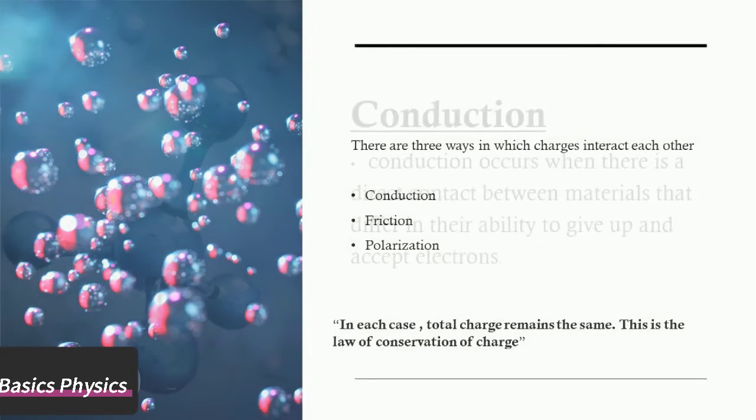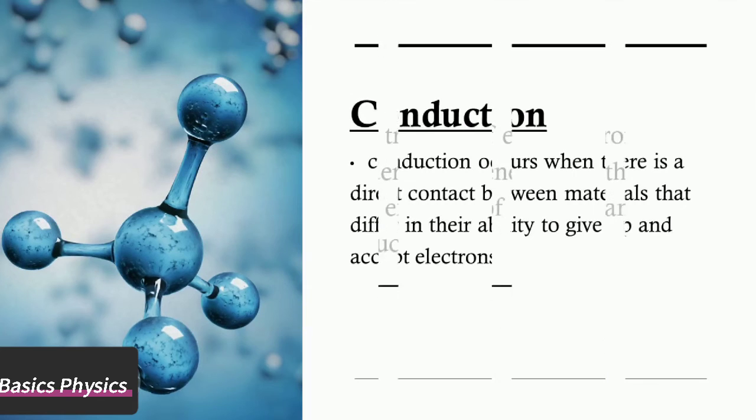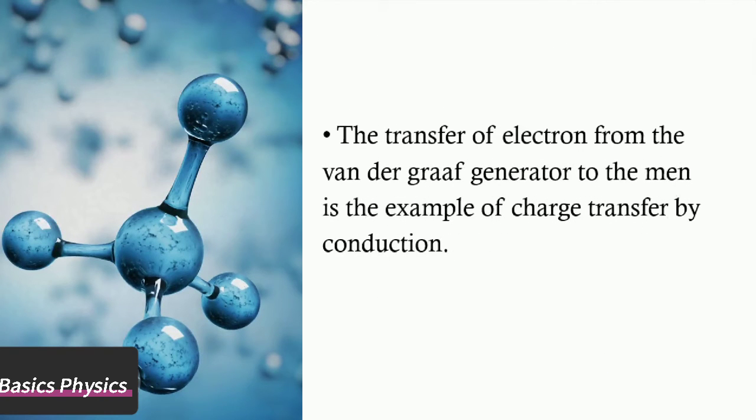Conduction occurs when there is a direct contact between materials that differ in their ability to give up and accept electrons. The transfer of electrons from the van der Graaf generator to the man is an example of charge transfer by conduction.